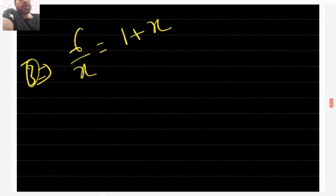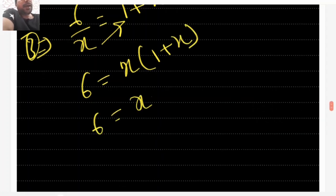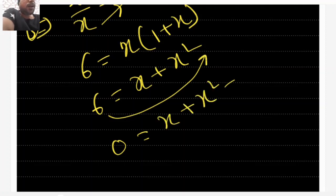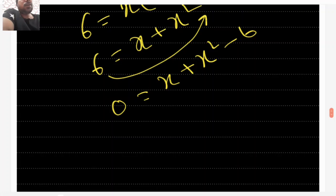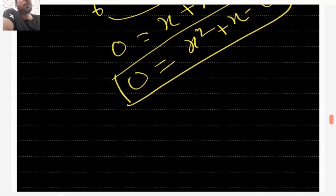Let's do it. We cross-multiply: 6 = x(1 + x), which gives 6 = x + x². Taking 6 to the other side: 0 = x + x² - 6. Writing it in general form: x² + x - 6 = 0. This is the quadratic equation you now have to factorize.